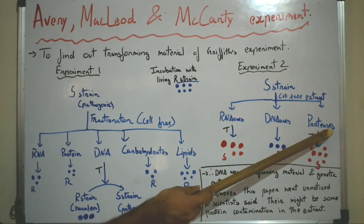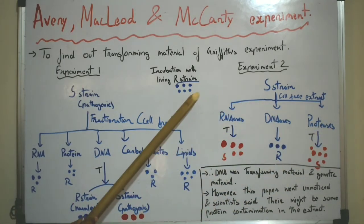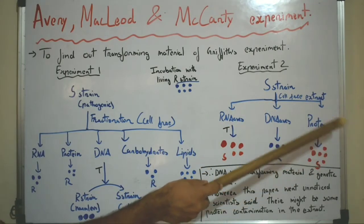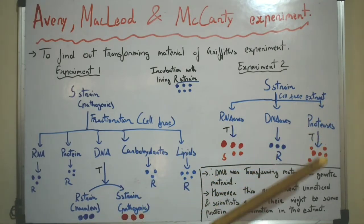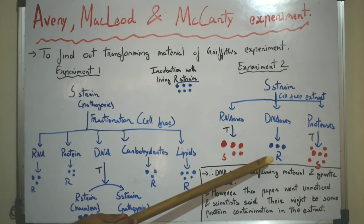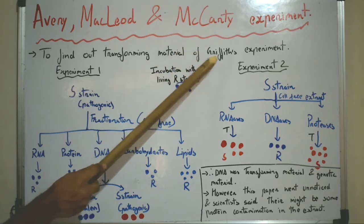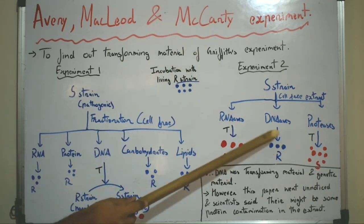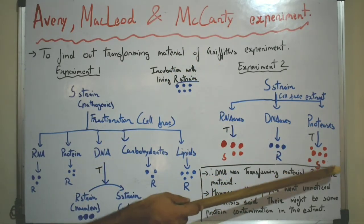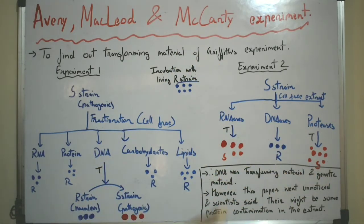However, when there was no protein present in the extract, the R-strain was still transformed into S-strain. Therefore, proteins were also not necessary for the transformation. This suggested that only DNA was necessary for the transformation, and therefore the transforming material of Griffith's experiment was DNA — and also the genetic material.